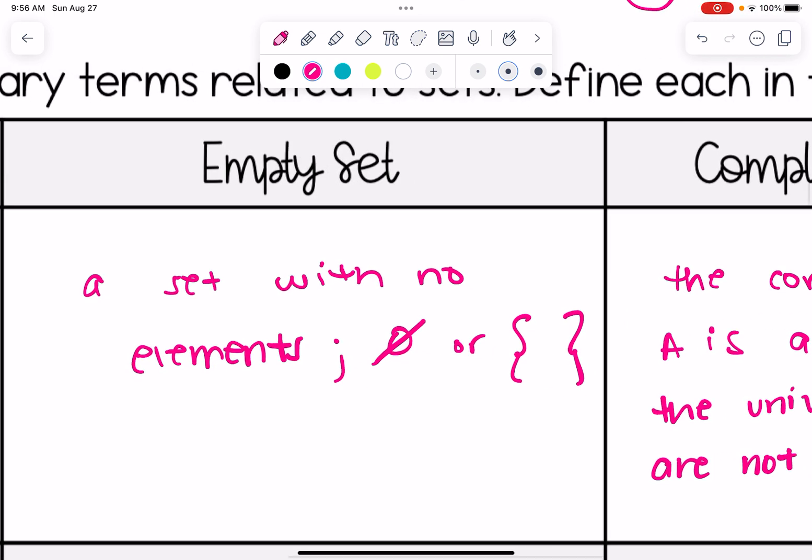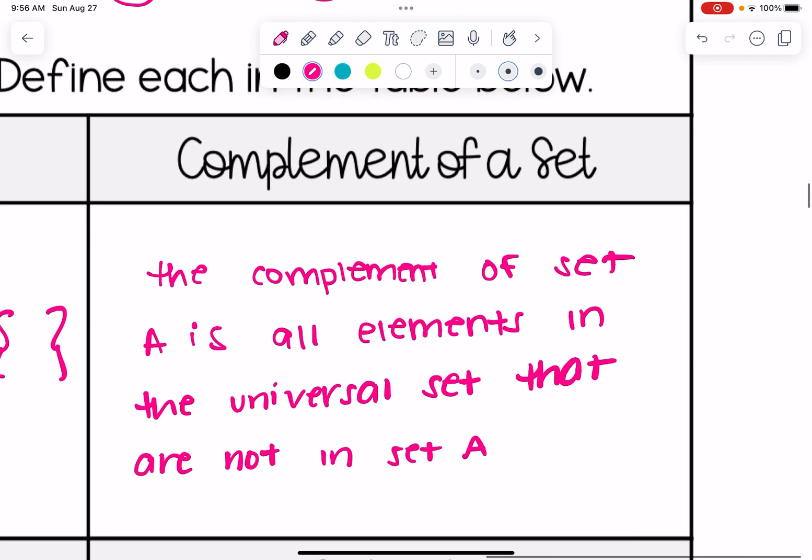The empty set is a set that has no elements. The way we look at that is with a zero with a slash through it or with curly brackets with nothing inside. The complement of a set: the complement of set A is all elements in the universal set that are not in set A. It's basically everything else, that's how you want to think about it. And again all these definitions will make more sense once we look at some sample problems in a few minutes.